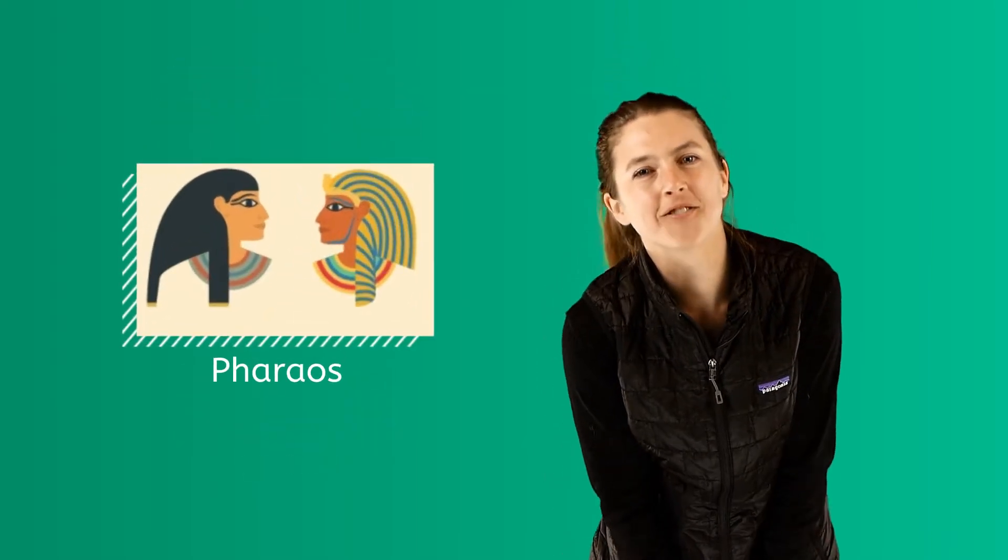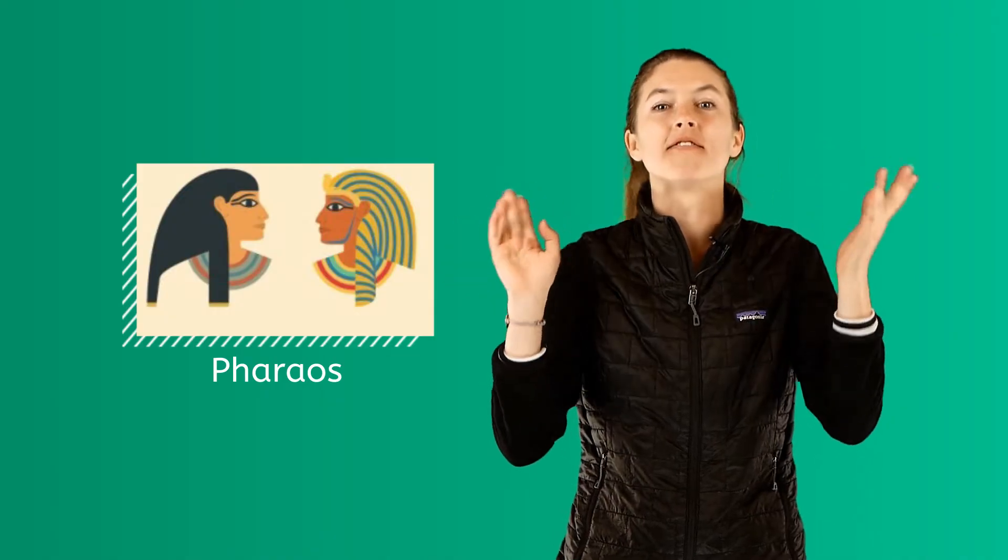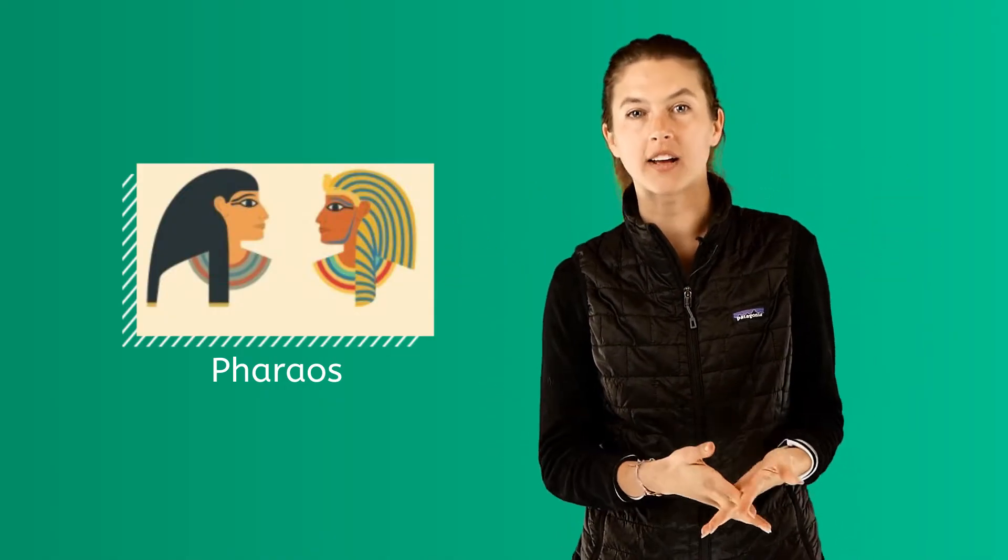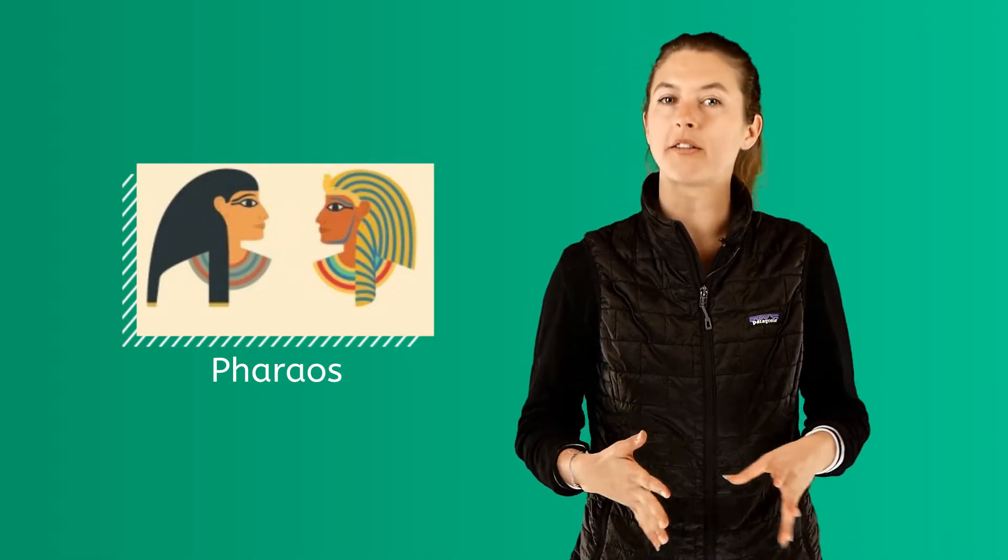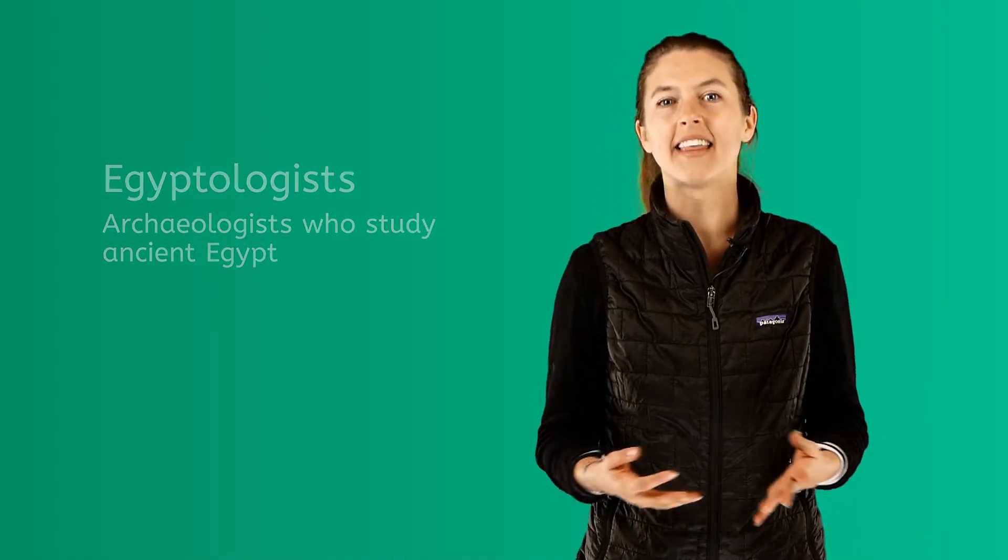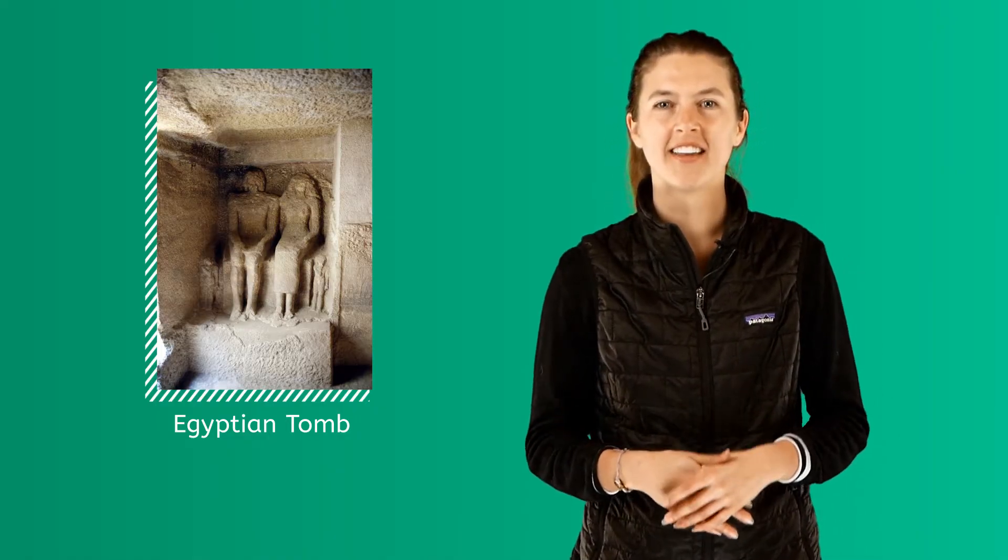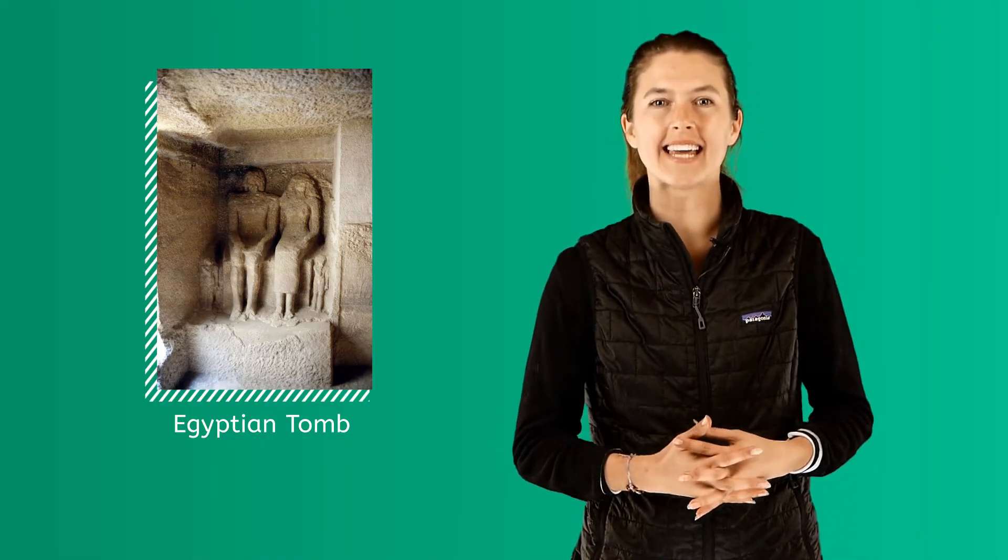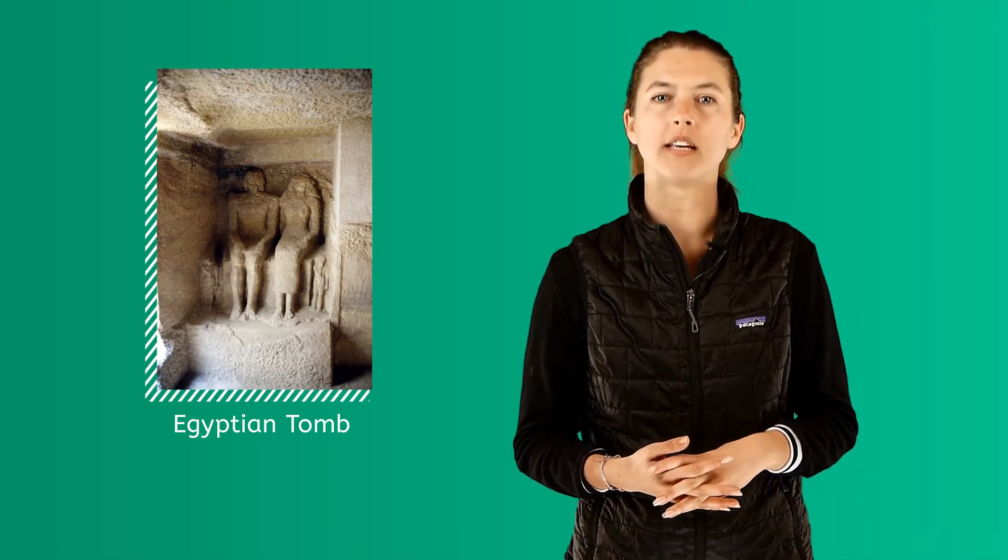Pharaohs were kings and queens that ruled Egypt and were considered gods. They were the heads of families, and these rulers often married their own relatives to keep control over Egypt in their family. We know about these rulers because of the work done by archaeologists and historians. Archaeologists who study Ancient Egypt are called Egyptologists. They have uncovered tombs or burial sites of these powerful rulers. Pharaohs believed that they could take their wealth and power with them after they died. This was due to their belief in an afterlife.